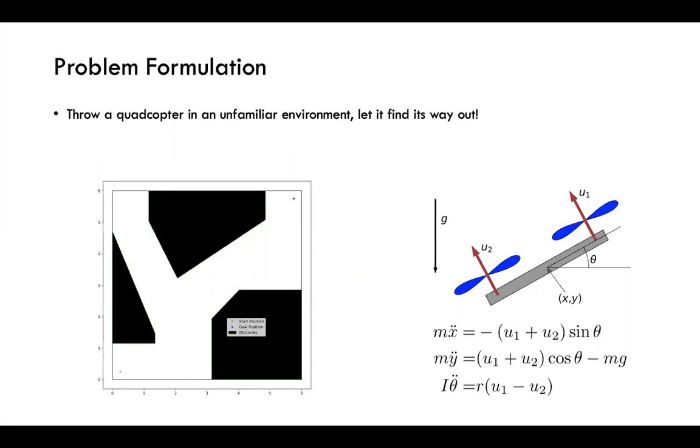Without loss of generalization, I formed a map on the left where the black colored pieces are the obstacles, and I want to move the quadcopter from the initial state here to the goal state on the top right without collision with any of these obstacles. So over here, I used a 2D quadcopter model, but it could be easily generalized into a 3D scenario.